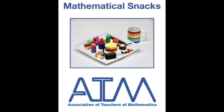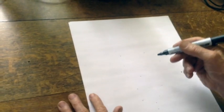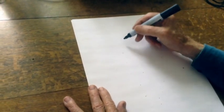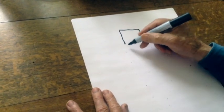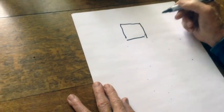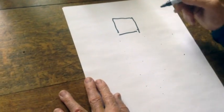This is a mathematical snack from the Association of Teachers of Mathematics for you to enjoy. This is a task which you could think was geometry. So my task is I'm going to draw a square and it's just a rough sketch of a square.